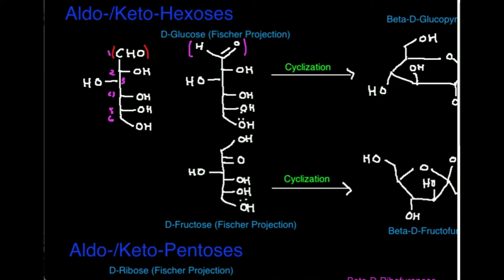Let's go over how the cyclization occurs. In the linear Fisher projection, there's an oxygen at position five. What it's going to do is attack position one — the aldehyde carbon — and that's ultimately what leads to cyclization. You could have a test question asking which oxygen in glucose's Fisher projection reacts to do the cyclization; that would be the position five hydroxyl group. Some people may be tempted to say position six, but it's actually position five for glucose.